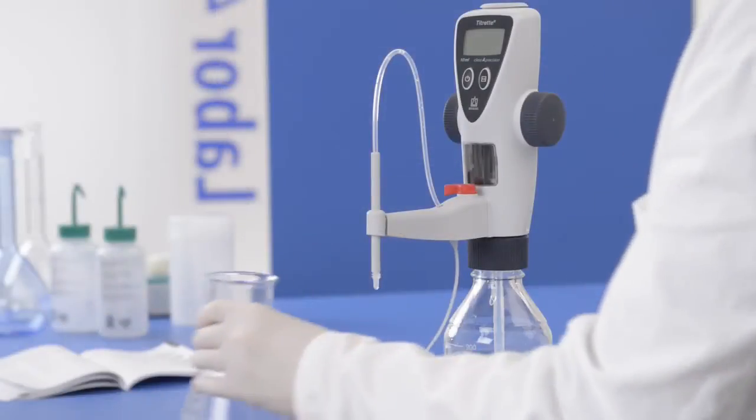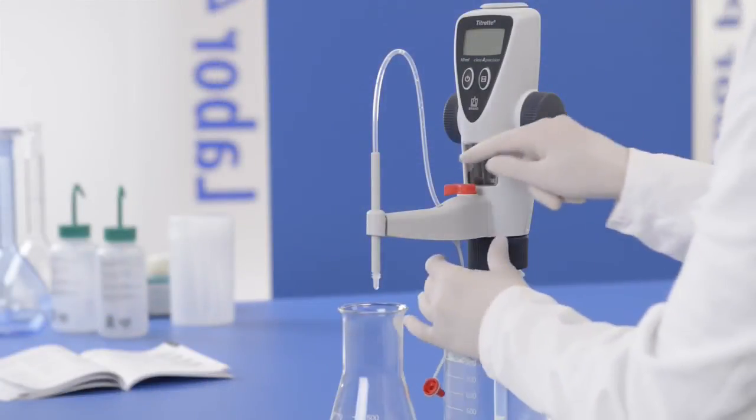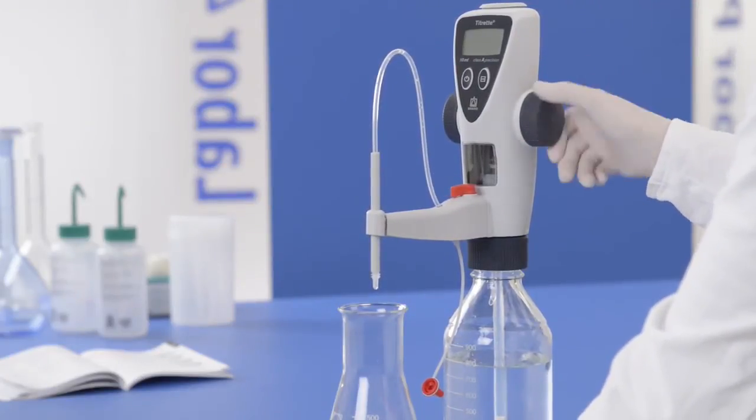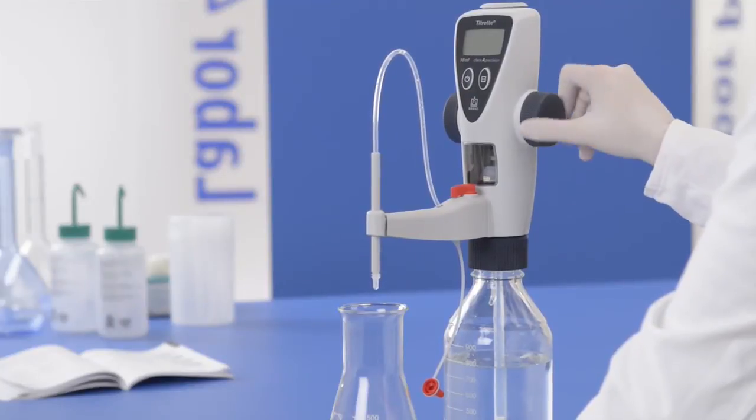If bubbles can still be seen in the titrating tube, it must also be primed. To do this, set the valve to 'Titrate.'